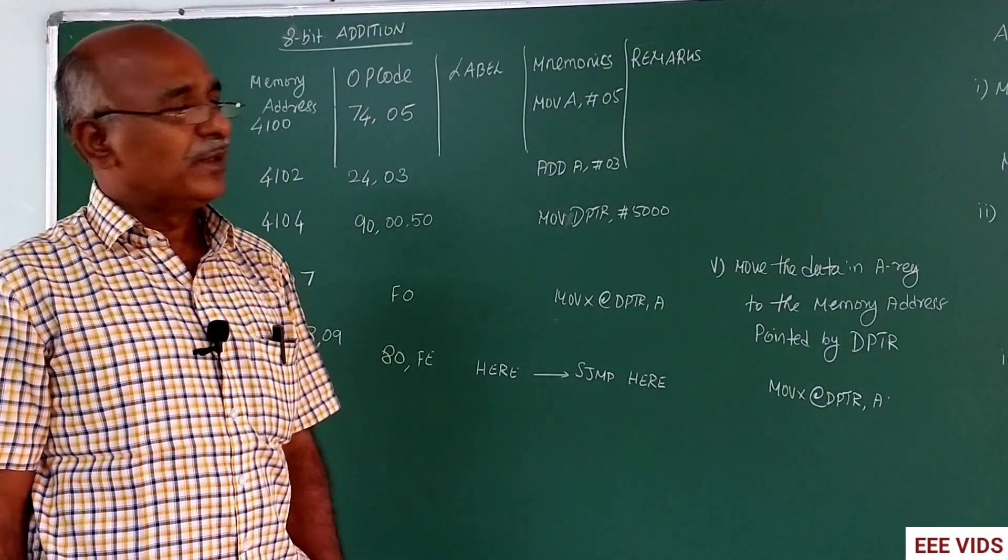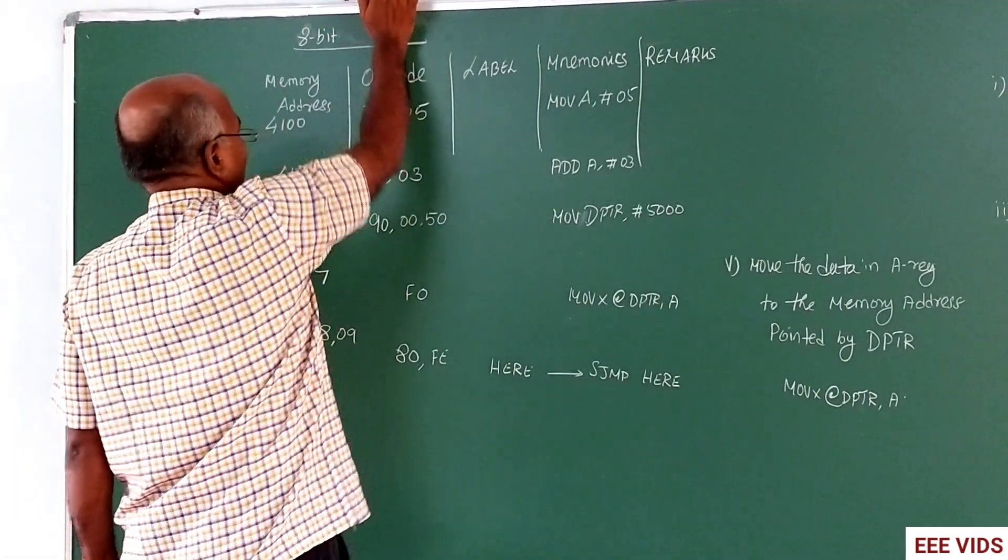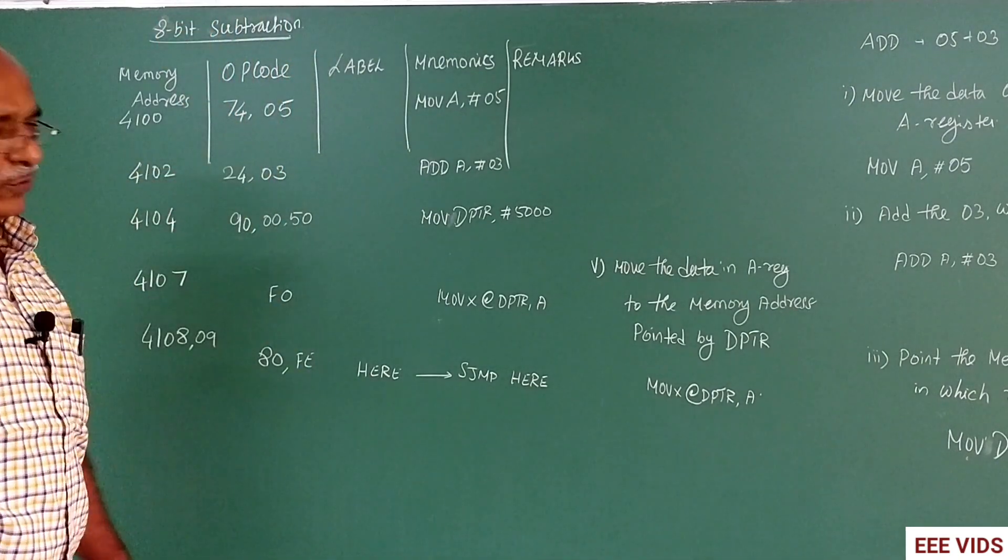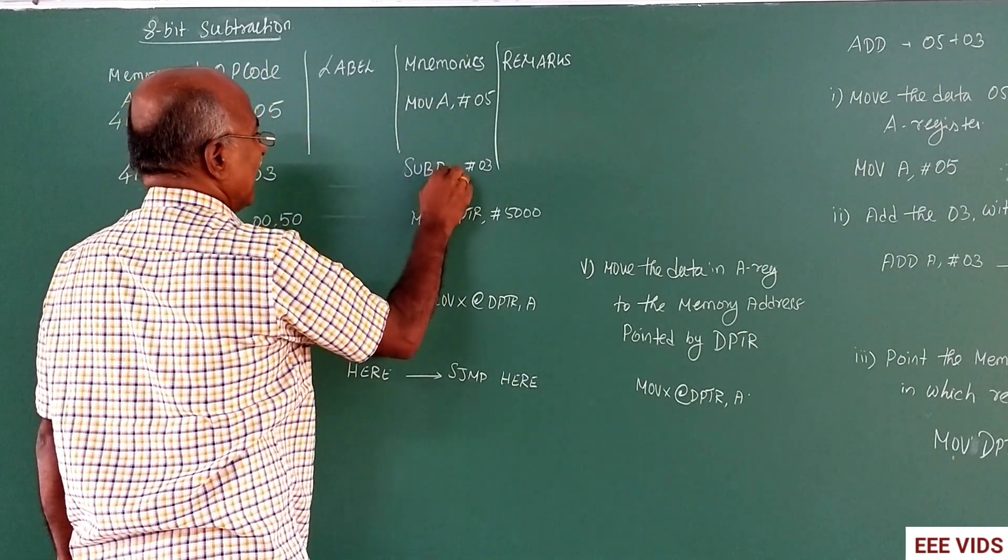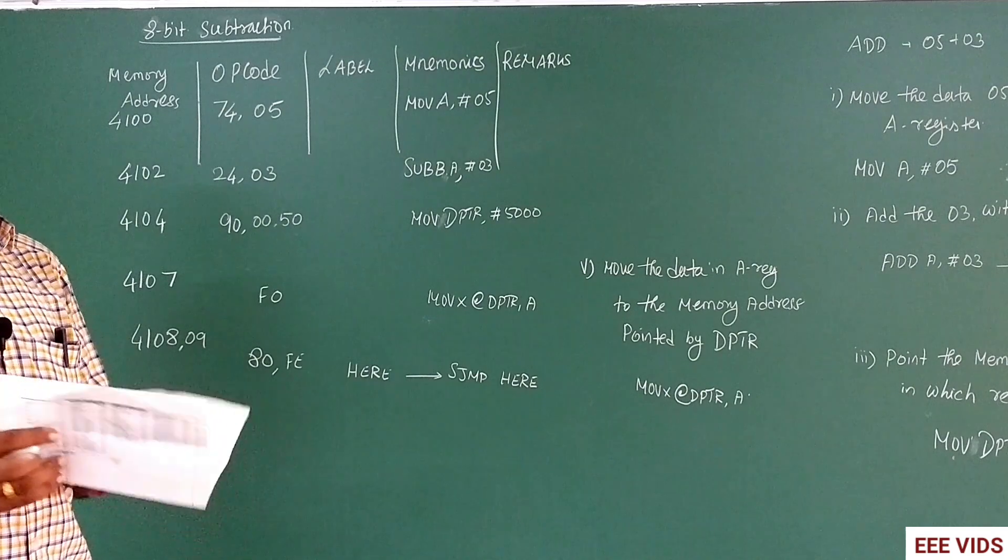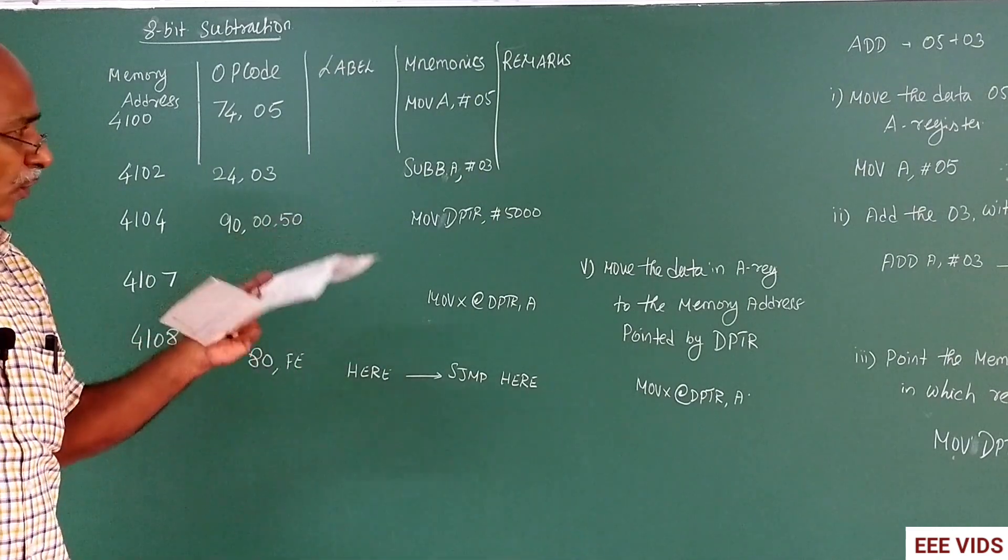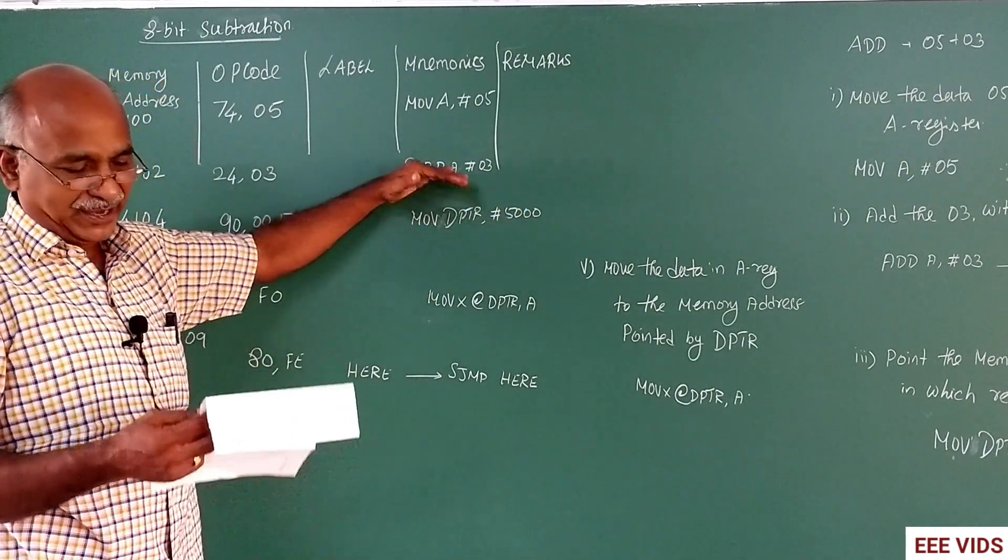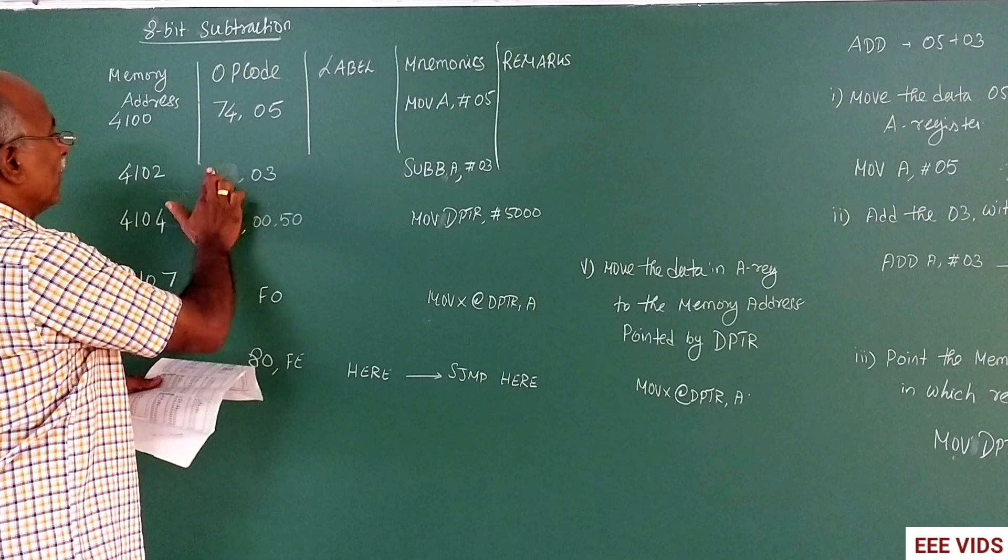8-bit subtraction program. Same program. For 8-bit subtraction, MOV A,05. Here instead of ADD, we use the instruction SUBB A,03. Subtract accumulator with borrow. The mnemonics program is similar. 05 minus 03, the result 02 goes to the 5000 location. Instead of ADD instruction, we use subtraction instruction. The opcode for SUBB A is 94. Use 94 instead of 24.